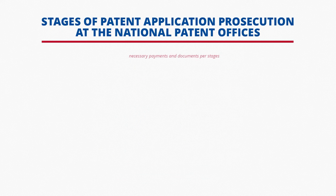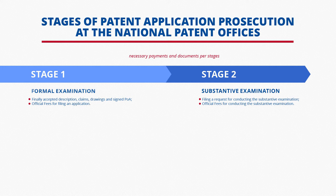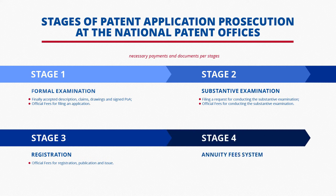Let's take a look at the stages of patent application prosecution at the national patent offices. The formal examination stage involves filing application materials and payment of official fees for filing the application. The substantive examination stage involves filing a request for conducting the substantive examination and payment of official fees for the substantive examination. At the registration stage, the official fees for publication and granting of the patent must be paid. After obtaining a patent, it should be maintained for each following year of validity under the annuity fees system.